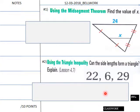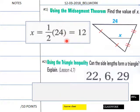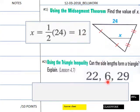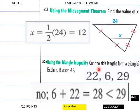Welcome back for solutions to today's bellwork. For number one, using the Mid-Segment Theorem: one half of 24 equals x, so x equals 12. And for the triangle question — can these side lengths form a triangle? The answer is no, because 6 plus 22 is less than 29, so they will not form a triangle.